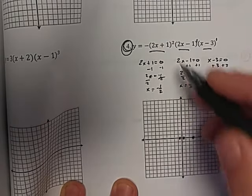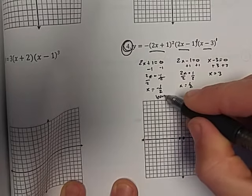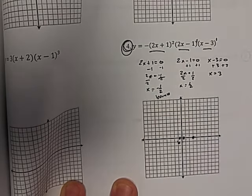So I'm going to bounce off of the negative one half. I'm going to bounce right there, and I'm going to go through the other two.